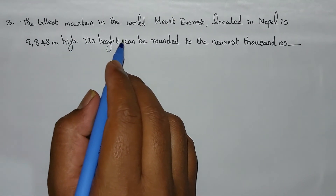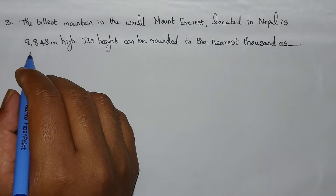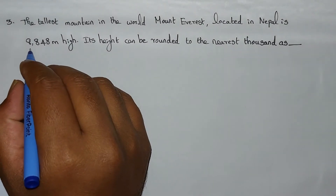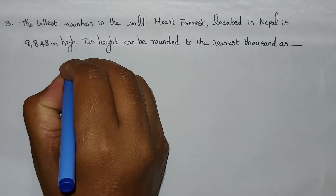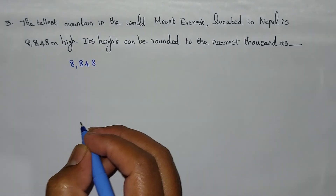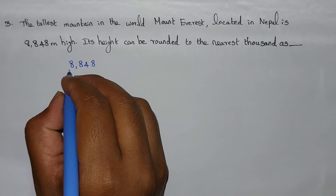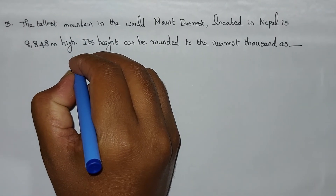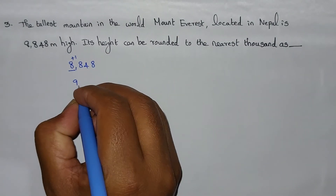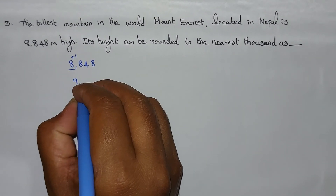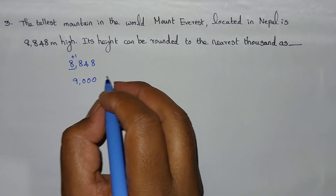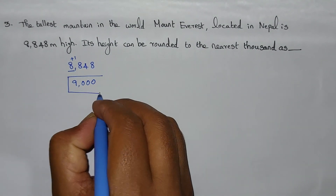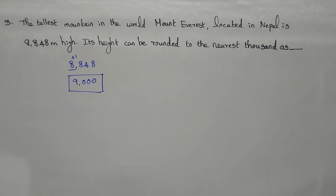Now, Problem 3: The tallest mountain in the world, Mount Everest, located in Nepal, is 8,848 meters high. Its height can be rounded to the nearest thousand. The digit 8 in the thousands place is considered. The right-hand side digit is greater than 5, so 1000 place value plus 1 equals 9. All digits to the right become 0. Mount Everest's nearest 1000 round-off value is 9,000. Thanks for watching this video.